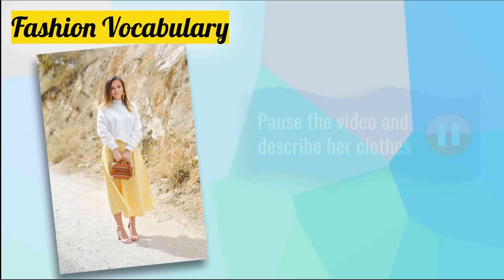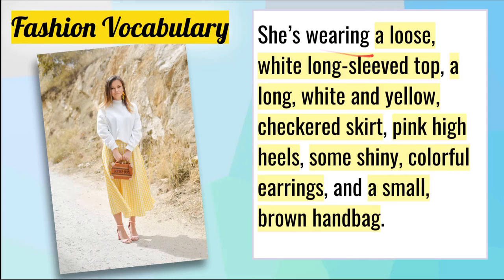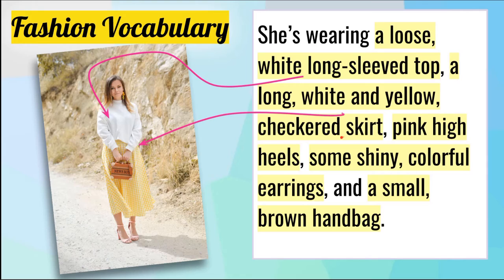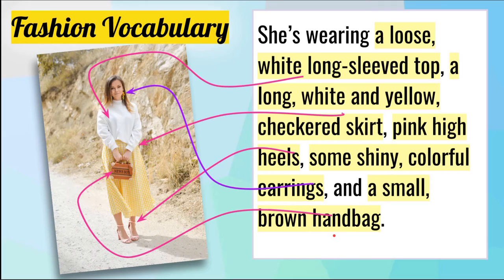Okay, let's see. Now I described her quite specifically here, but still using simple language. She's wearing a loose white long sleeve top, a long white and yellow checkered skirt, pink high heels, some shiny colorful earrings, and a small brown bag. How's that? I think that's quite specific — if you closed your eyes, you could picture her from what I described here.